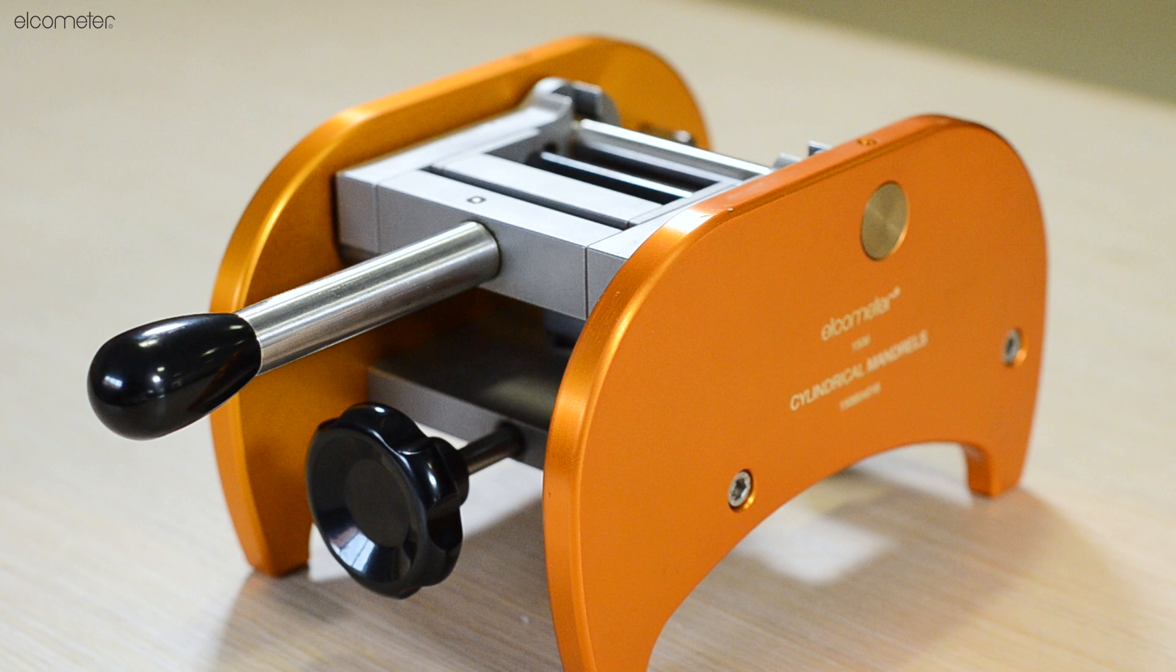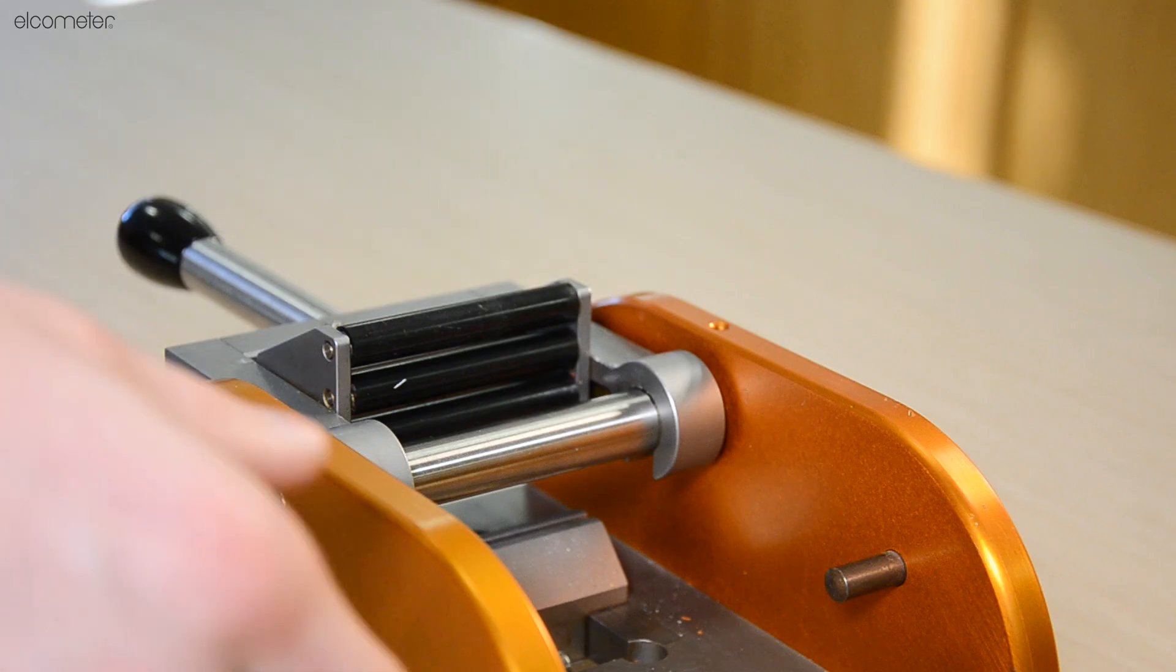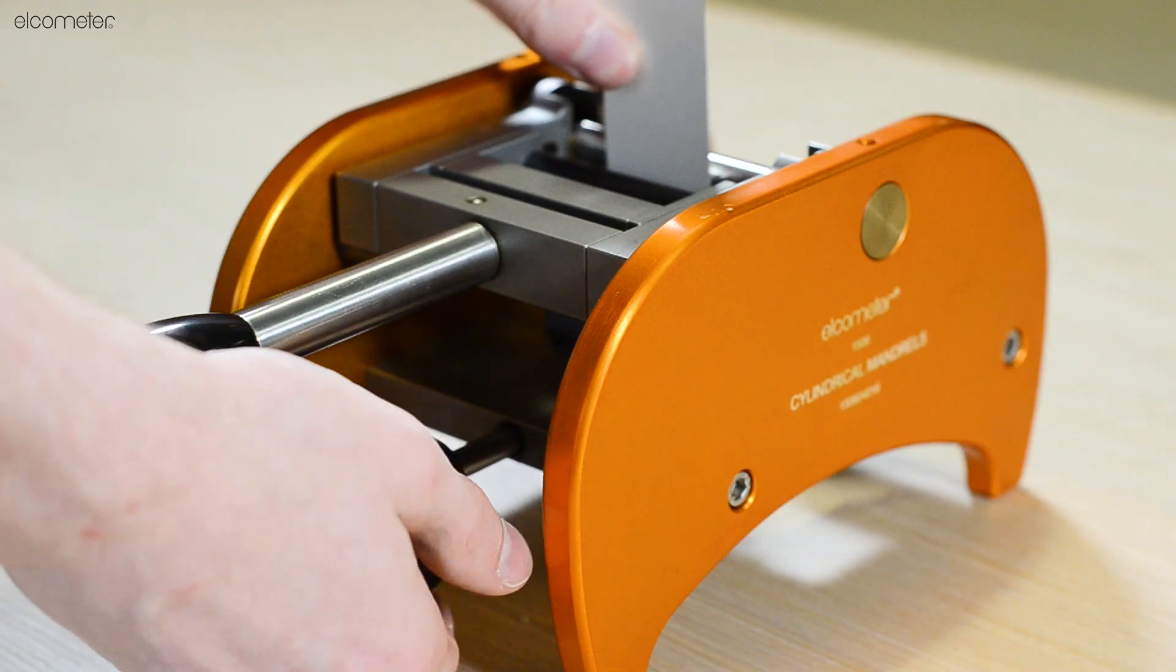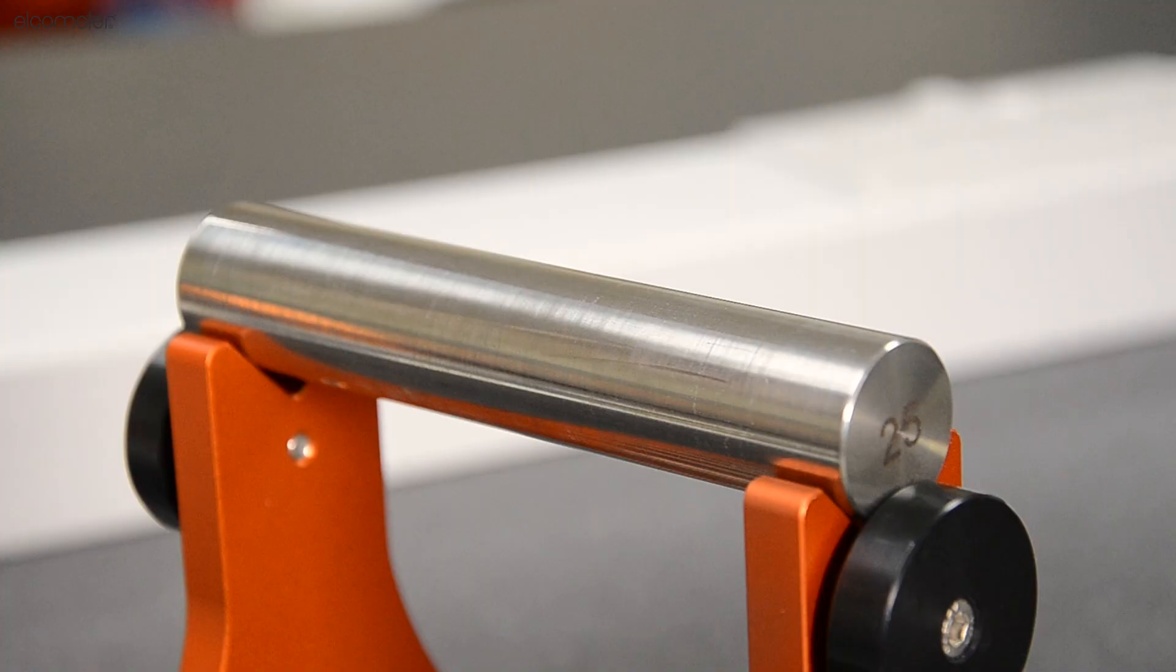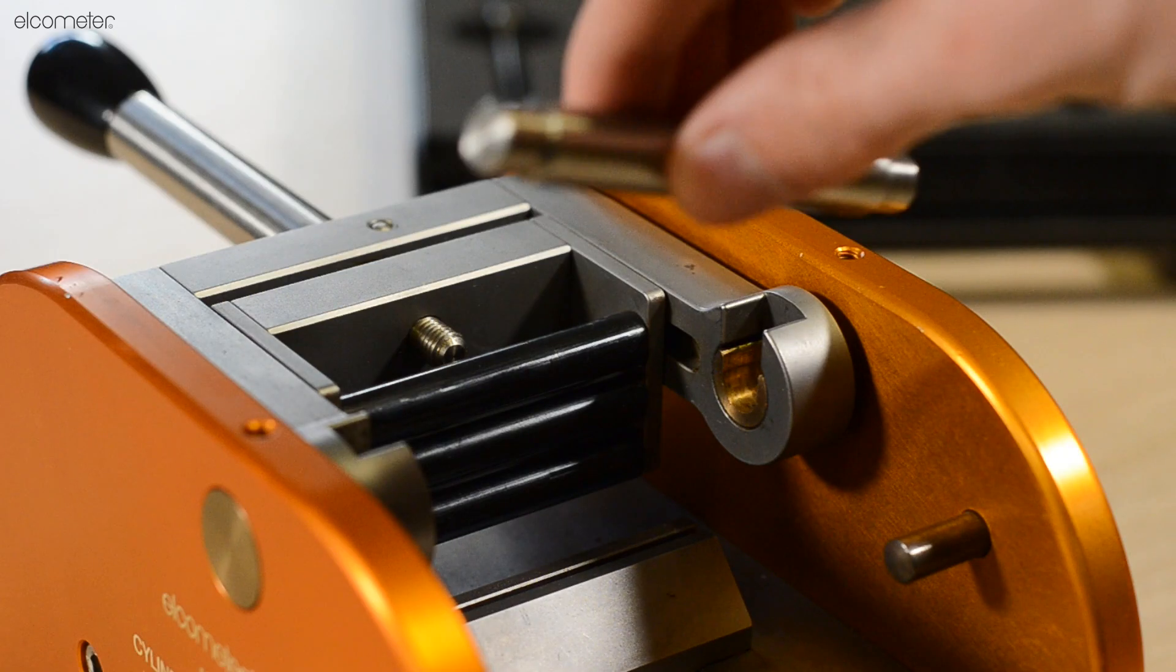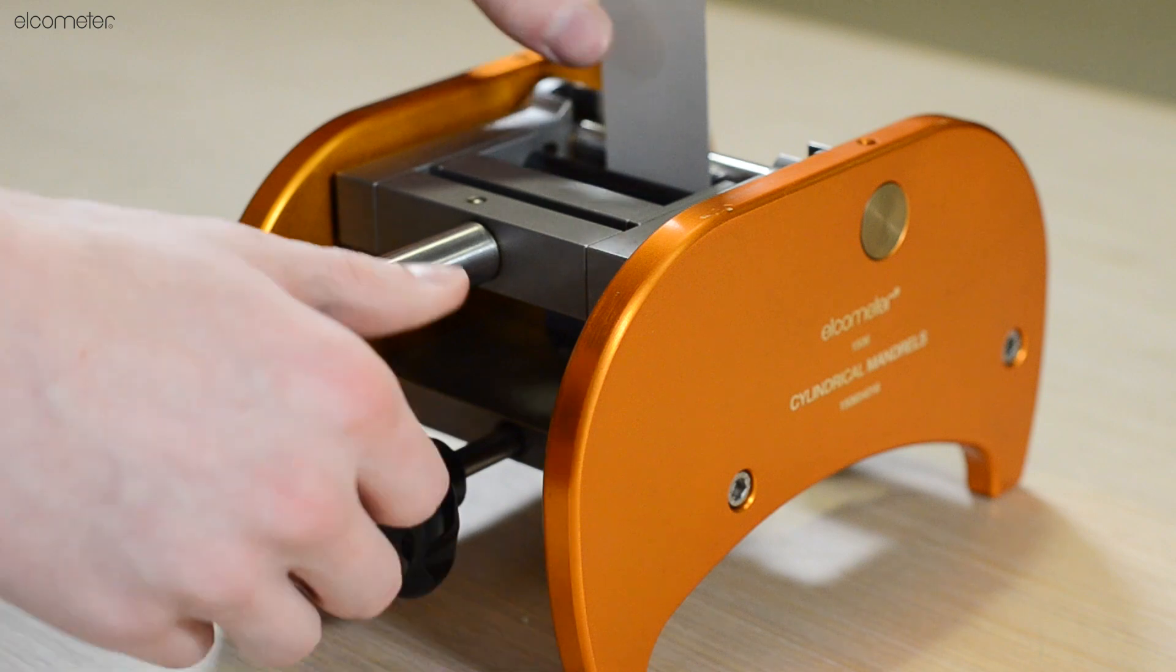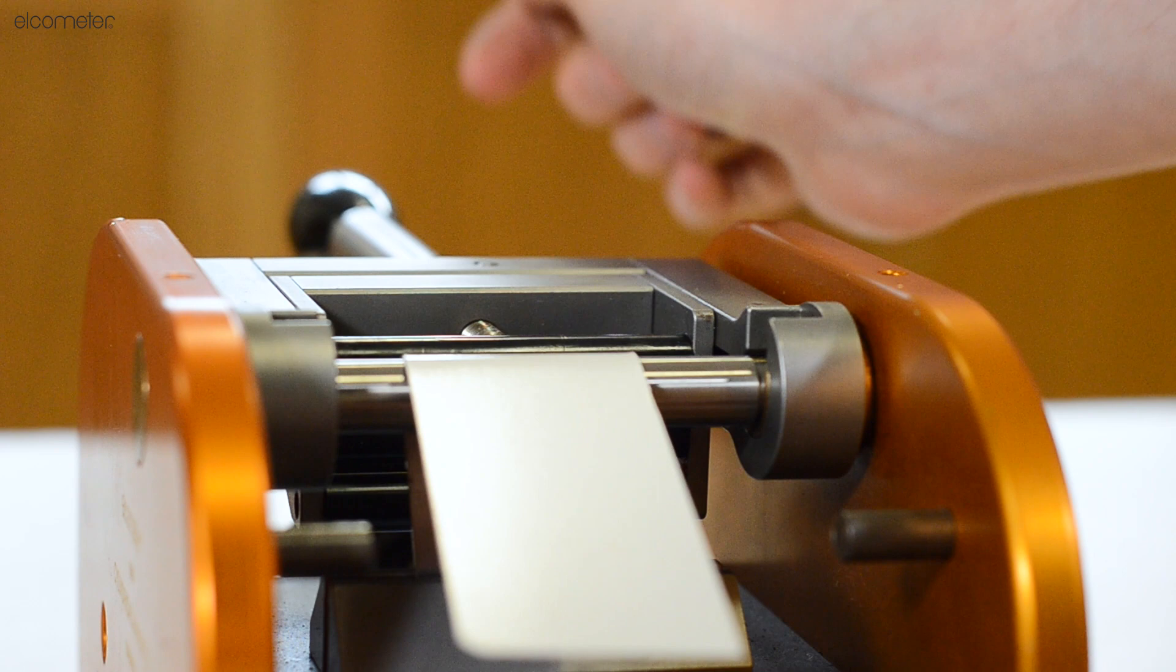During a cylindrical mandrel bend test, a metal sheet coated with the material under test is bent over a range of ever decreasing cylindrical mandrels. This can be done by hand using the Elcometer 1500 cylindrical mandrel on a stand or for a more consistent and customizable test, the Elcometer 1506 cylindrical mandrel bend tester with height adjustable rollers and bending lever can be used.